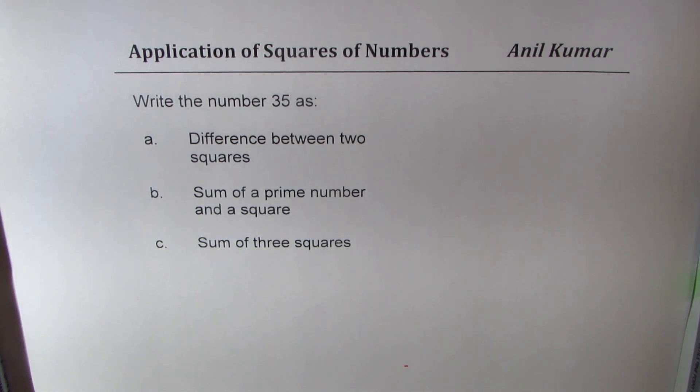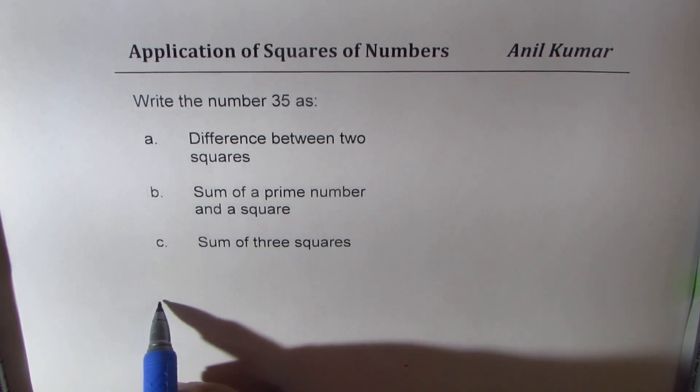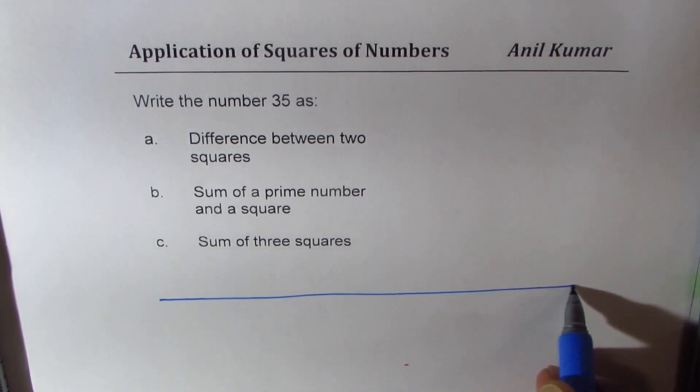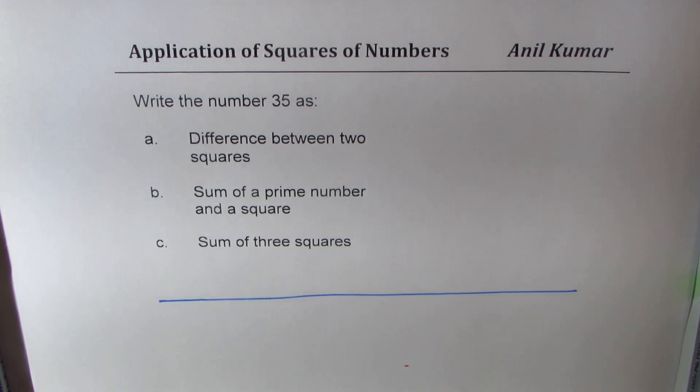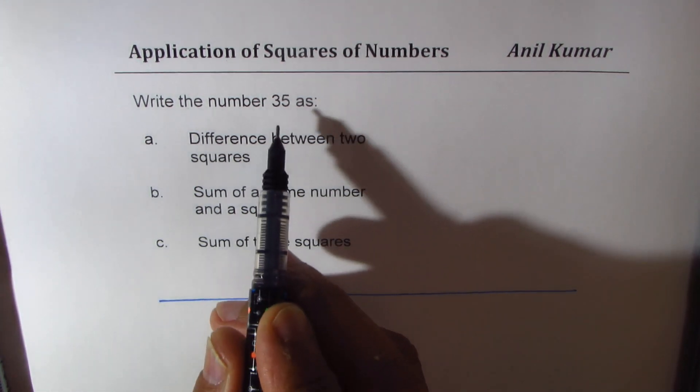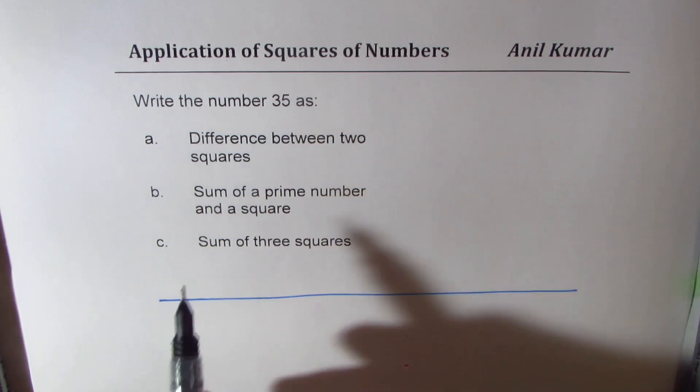If you try to do it straight away, it might be slightly difficult, but now try to see it like this. Let us write down all the numbers which we know, which will give you a square up to 35.